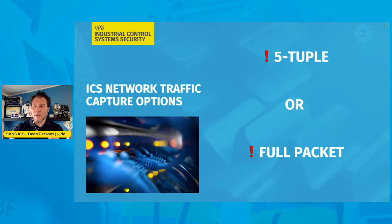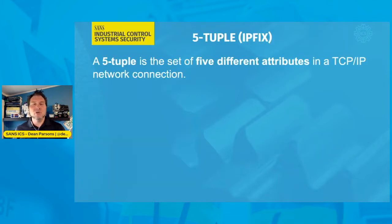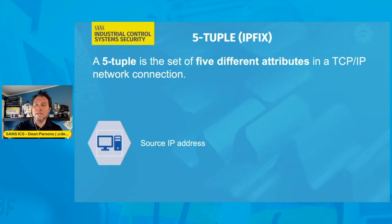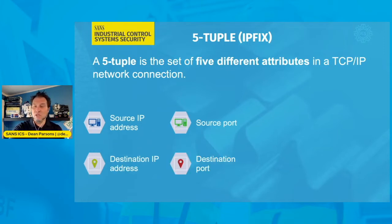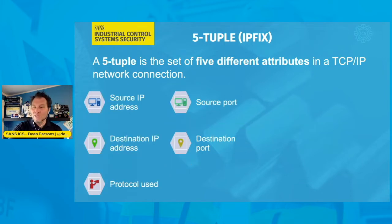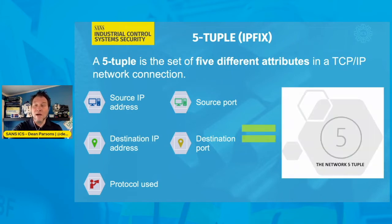When we talk about the 5-tuple, it's easy to get, but you are somewhat limited. The 5-tuple is a set of five attributes in a TCP/IP connection. They contain your source IP address, your related source port for that connection, your destination IP address, your destination port, and the fifth component is your protocol being seen in that specific connection. These five attributes make up the network 5-tuple, also known as IPfix.